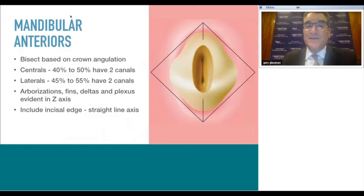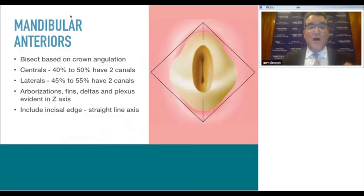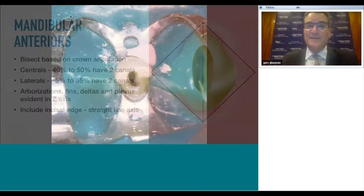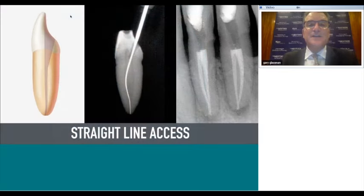Mandibular anterior teeth: over 50% have a lingual canal—that's important to understand. Studies by Bertucci, Green, Wu, and Cutler have established that these canals exist. We must find all the canals to remove all tissue that could lead to apical periodontitis. Go into the incisal edge ever so slightly; otherwise you'll leave tissue that may discolor the tooth and you may miss that lingual canal.